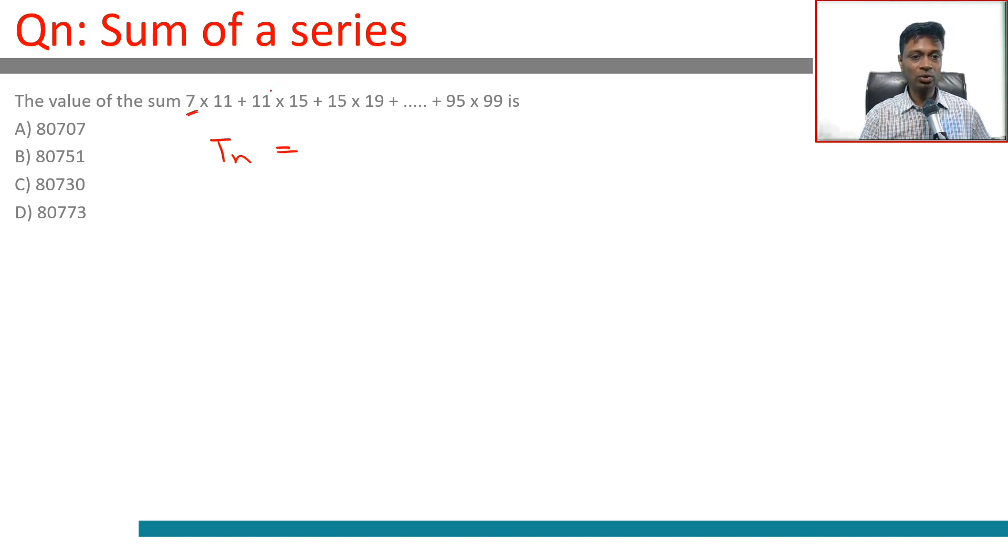We can also write this as 4n plus 3 into 4n plus 7 for each term. Why am I choosing 4n? Because from 7 I go to 11, 11 I go to 15, 15 I'll go to 19. My step size is in steps of 4. To increment from one term to the next term, my term has to go up by 4, that means I need to have a 4n sitting there.